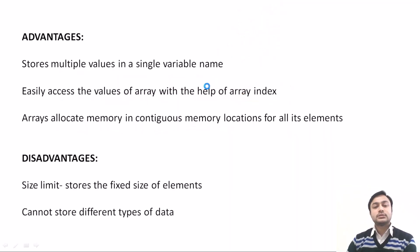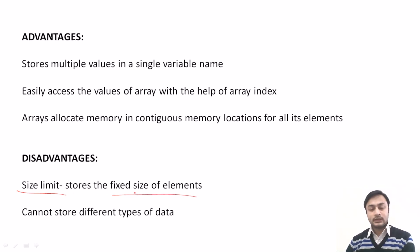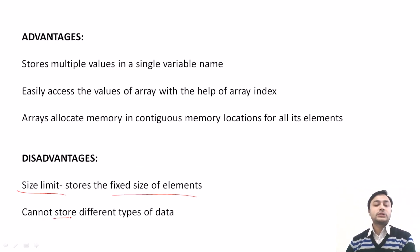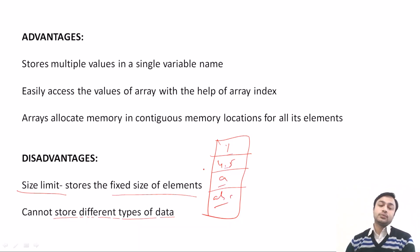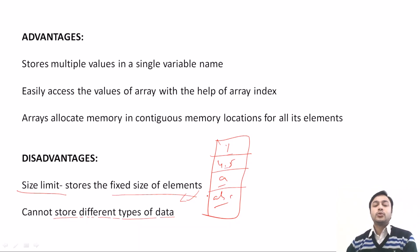The disadvantage is that there is a size limit — the array has a fixed size. Suppose you want to enter 10 elements but you have defined only 5, so you cannot store more than 5 elements. It cannot store different data types; you can only store data of similar type. If you want to store different data types — for example, 1, 4.5, and characters — you cannot store them in an array. For that, you can use a structure, because a structure is a collection of data items of different data types, or you can also use a class.